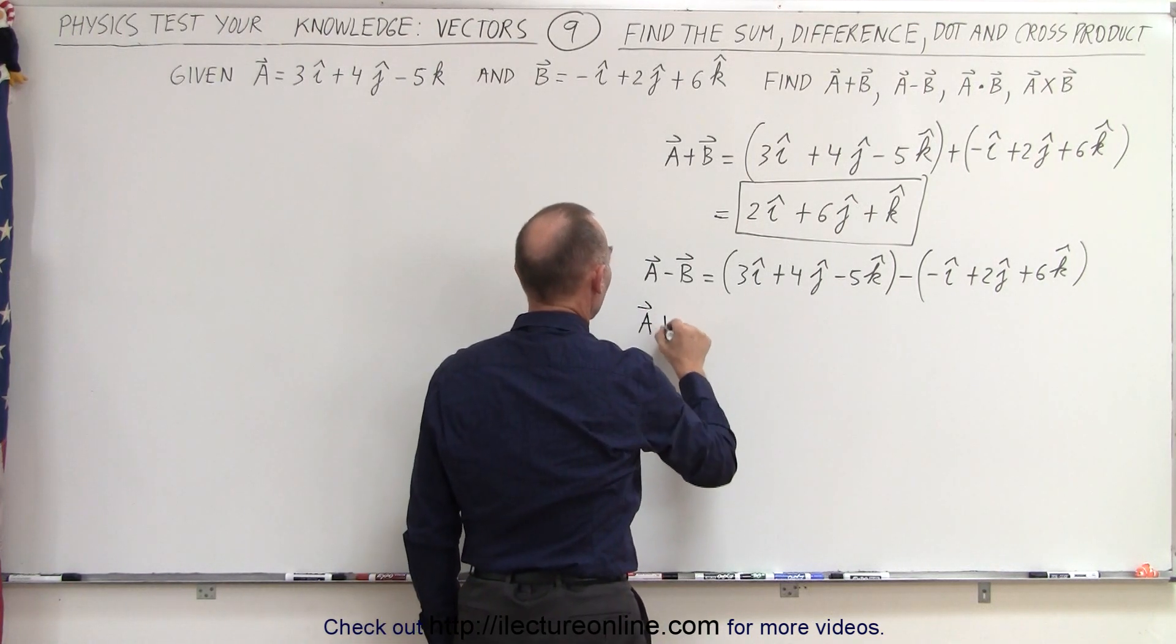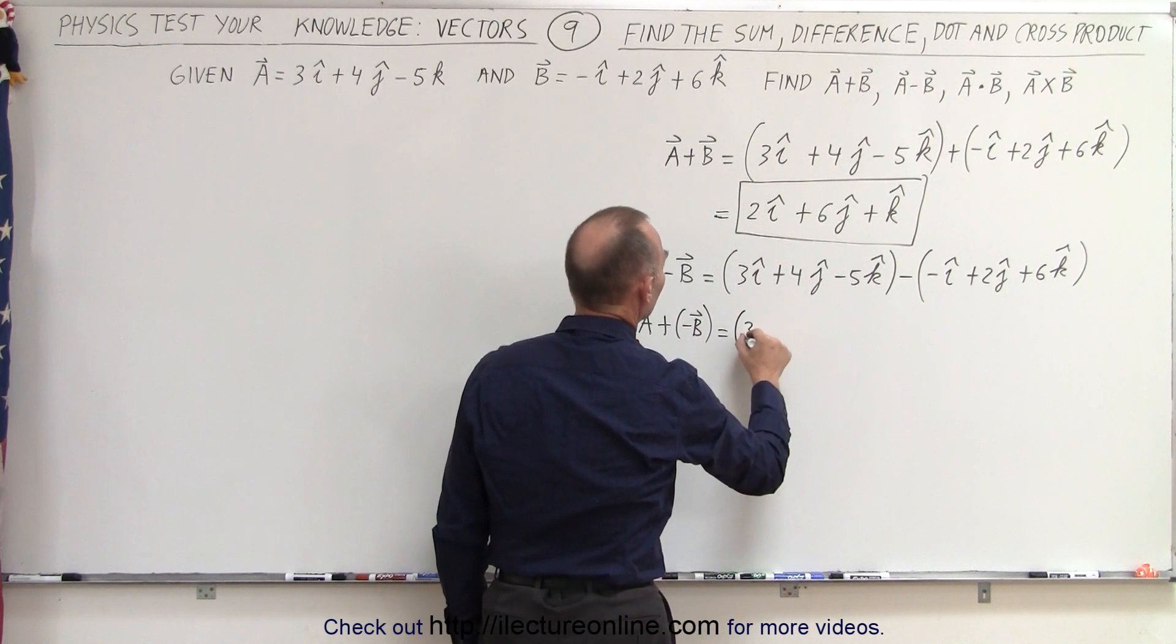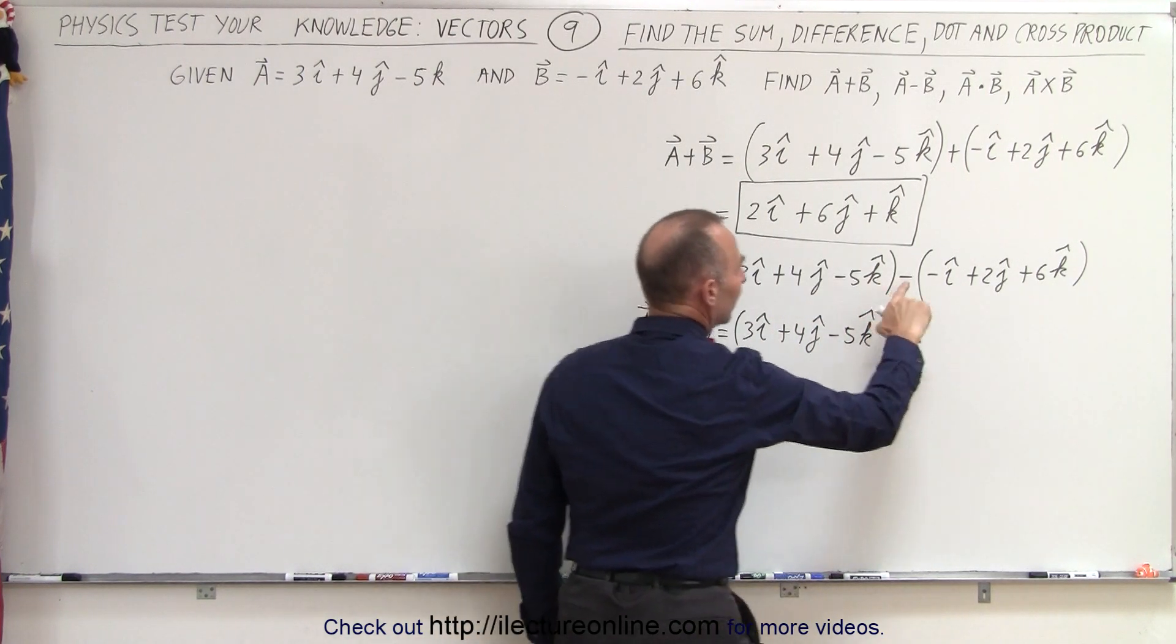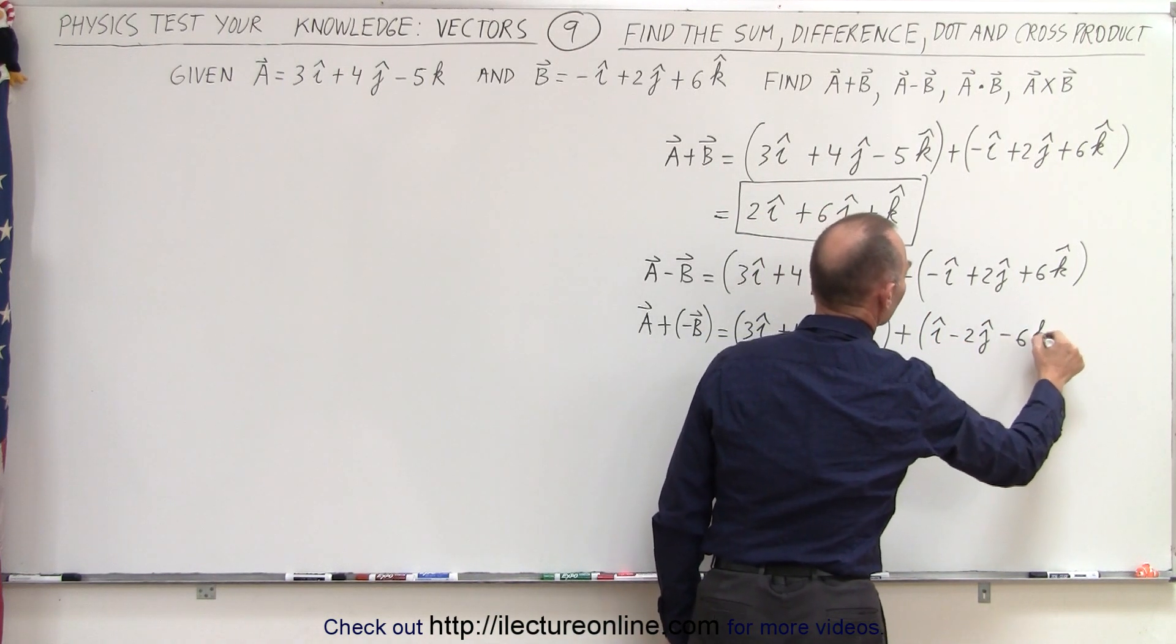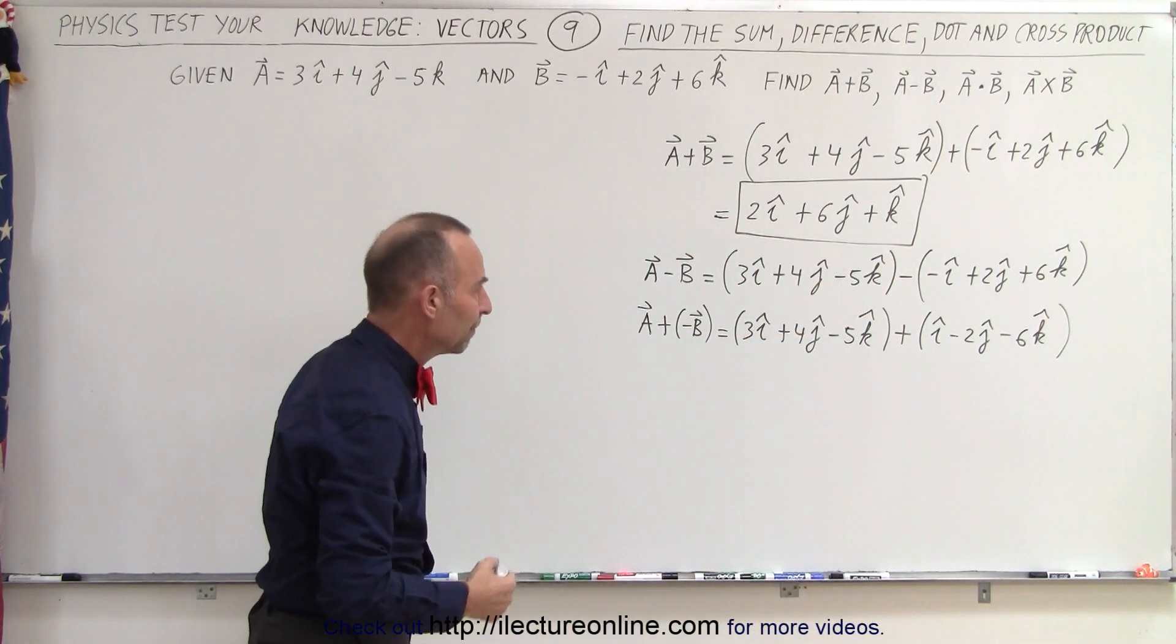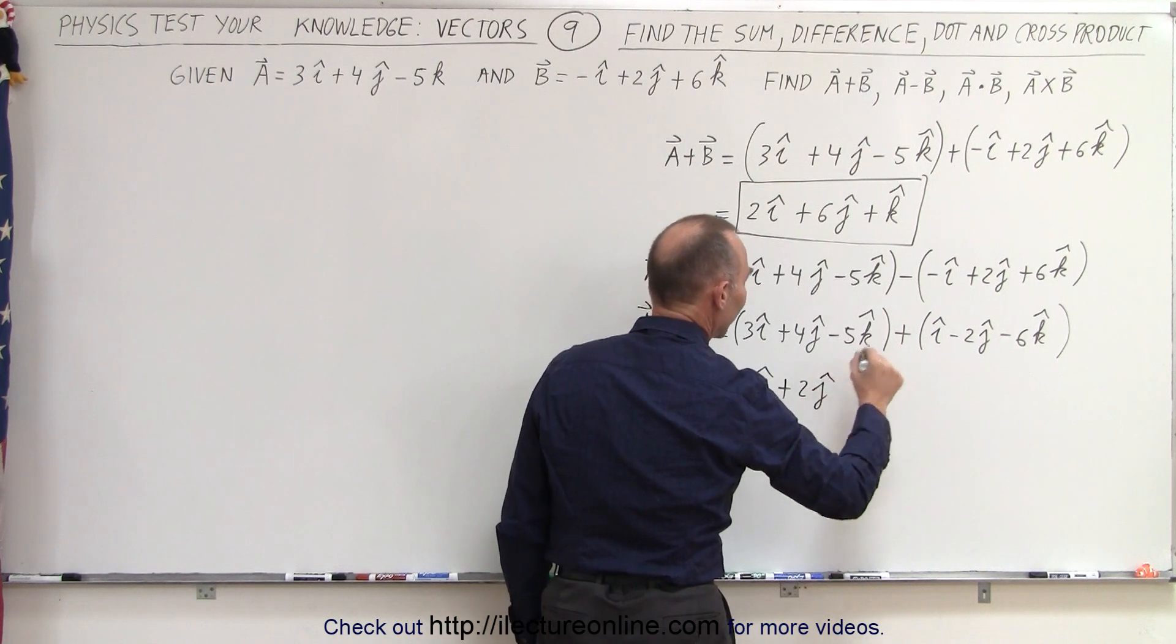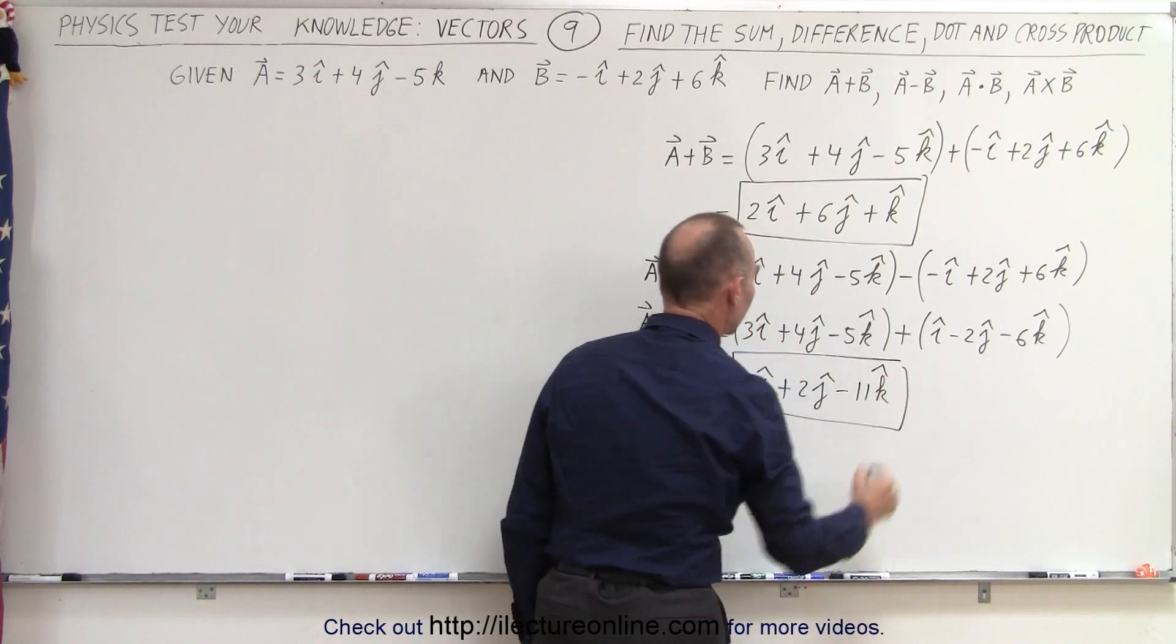This could be written as a plus the negative of b. And if we think about it this way, this would then be equal to 3i plus 4j minus 5k, and then plus the negative of this, which would be i minus 2j minus 6k. So, this now becomes 3 plus 1 or 4i, 4 minus 2, which is plus 2j, and minus 5 minus 6 is minus 11k. So, this would then be the difference between the two vectors.